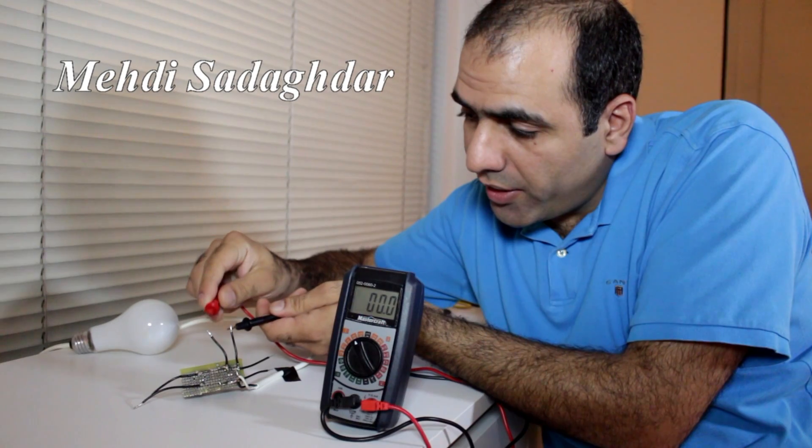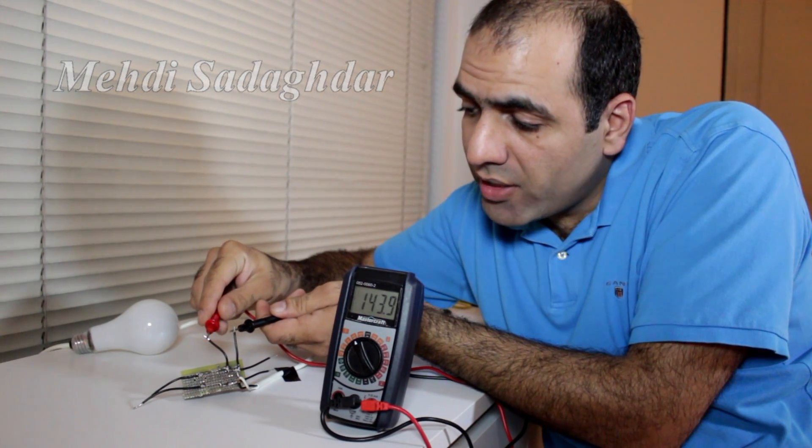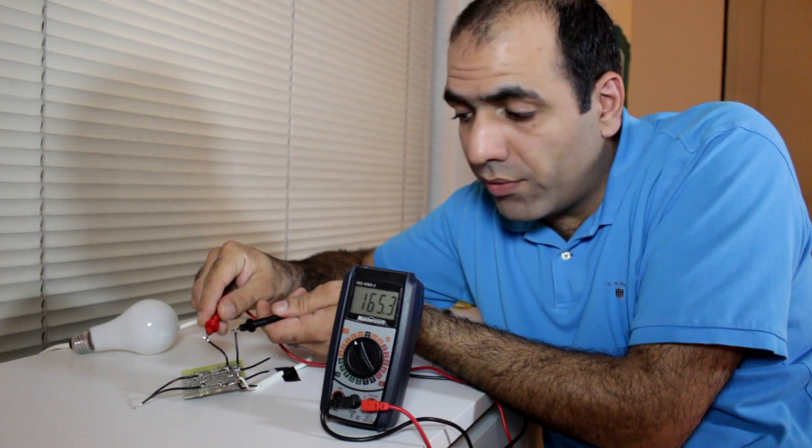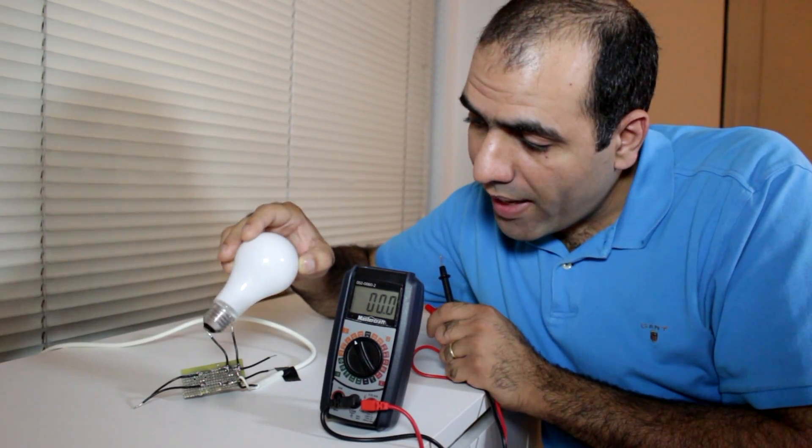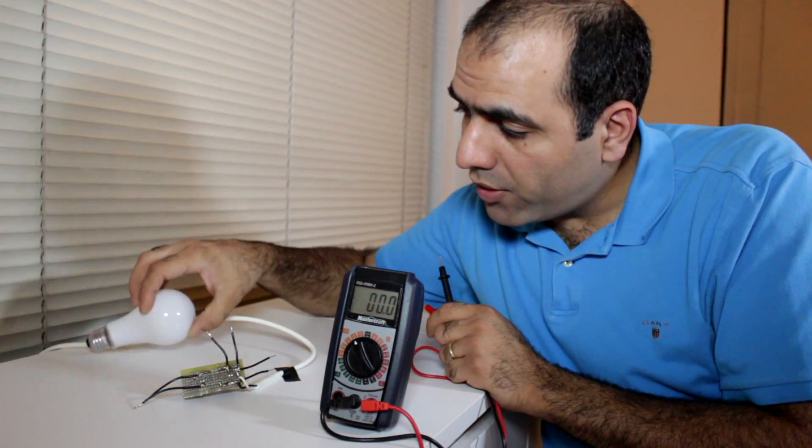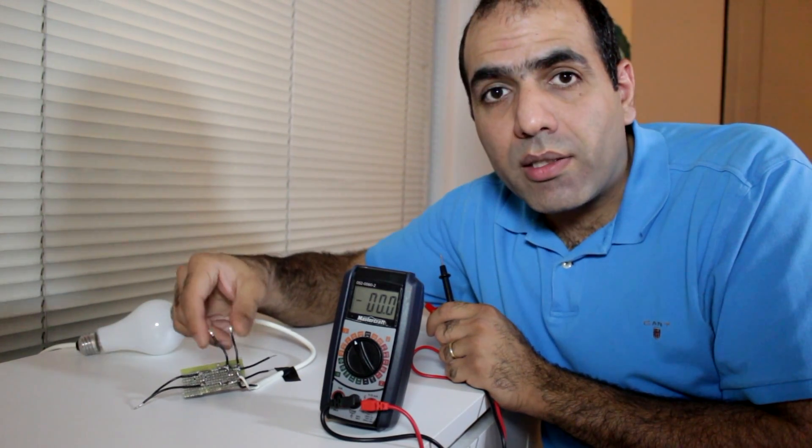For example, I have my rectifier circuit here that generates close to 170 volt DC output from the 120 volt AC input. It can even turn on a lamp. But if I touch the output, I can barely feel it.